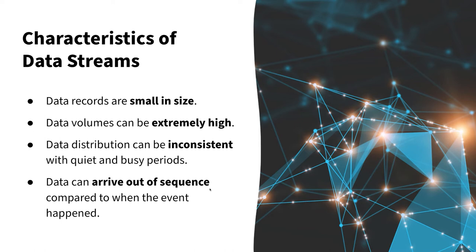Let's look at the characteristics of what one of these unbounded data streams might look like — your stream processing software needs to be able to handle all of these points. First, we've got small data records, often JSON, XML, or even CSV fragments. They're small in size, but there can be huge volumes of them, and when summed up over a large period of time, the actual data storage volumes can be significant.